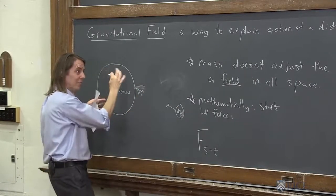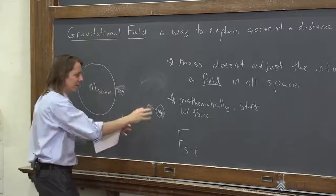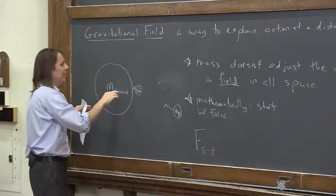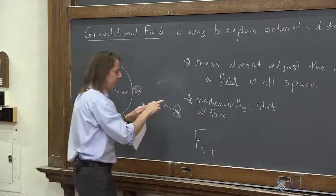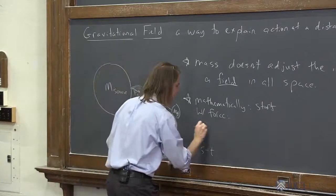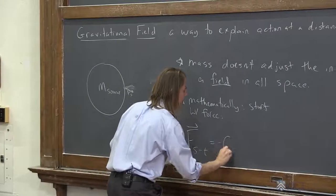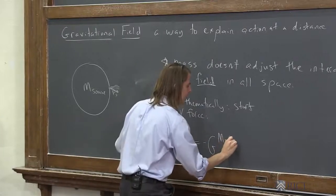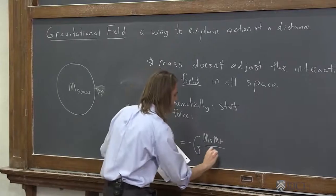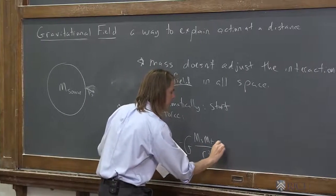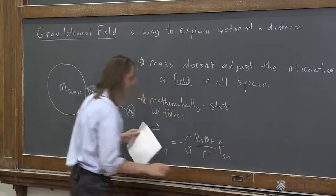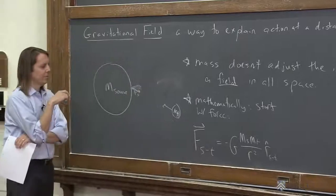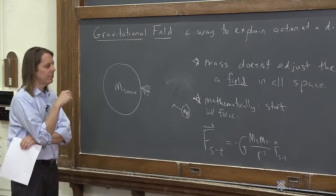But to start, we just think of this one as the main one, and this is the test one. So the force that the source mass creates on the test mass looks like this, minus big G, mass of the source mass, mass of the test mass, the separation between them, and then the unit vector from source to test. That was the formula that we used, Newton's formula.